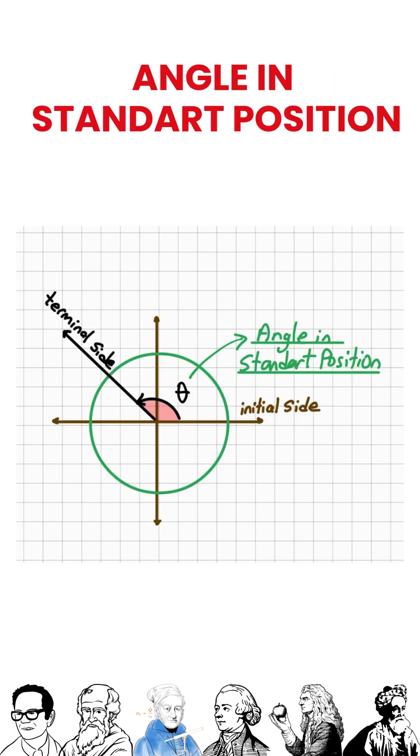An angle is in standard position when its vertex is at the origin and one side lies on the positive x-axis. This side is called the initial side, and the angle is measured from it.